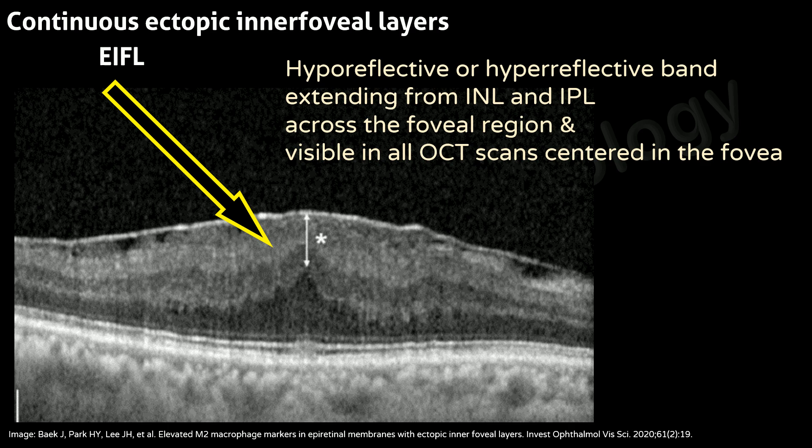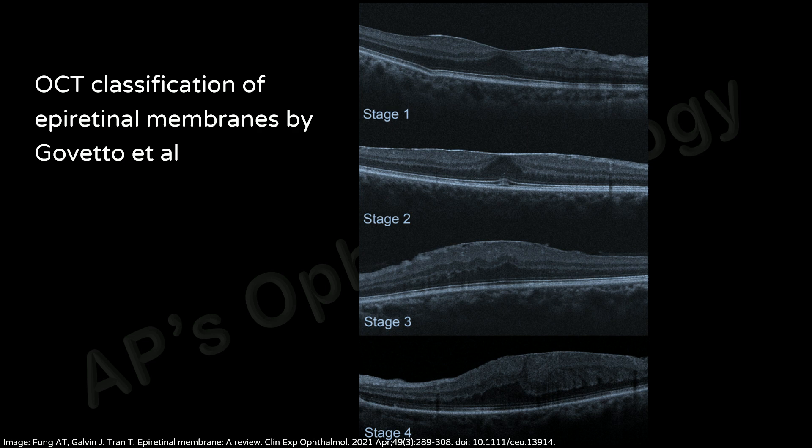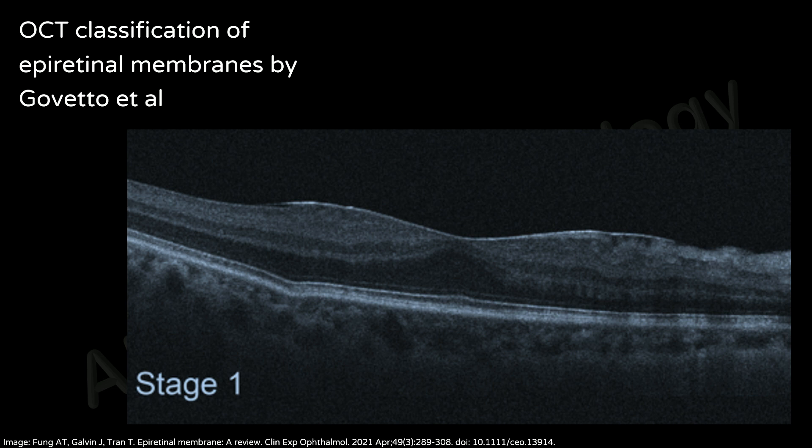Goveto et al classified epiretinal membranes into four stages. Stage one is defined as the presence of a mild ERM with negligible morphological or anatomical disruption. All retinal layers are clearly identified with easily distinguishable boundaries. The foveal depression is either normal or slightly shallow.